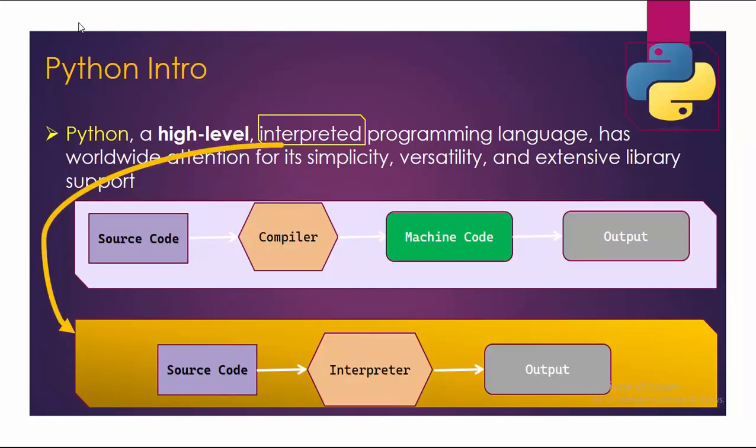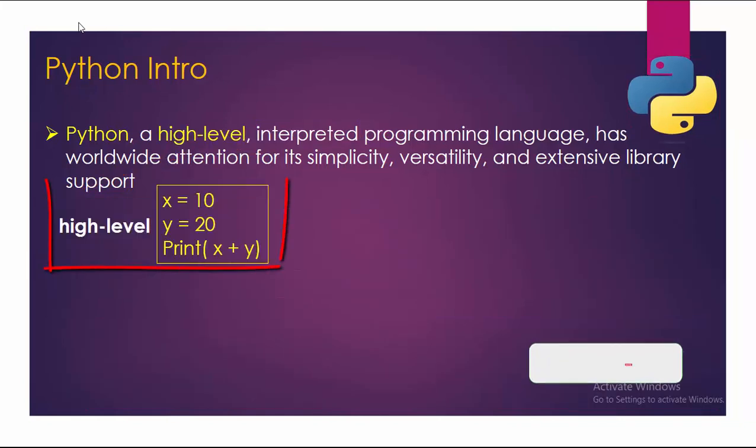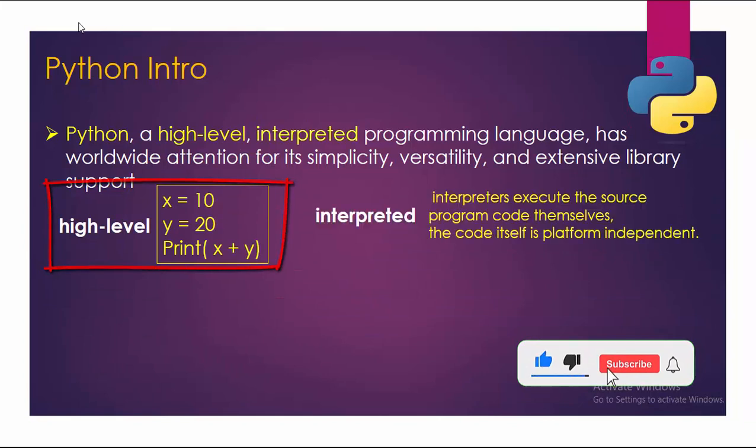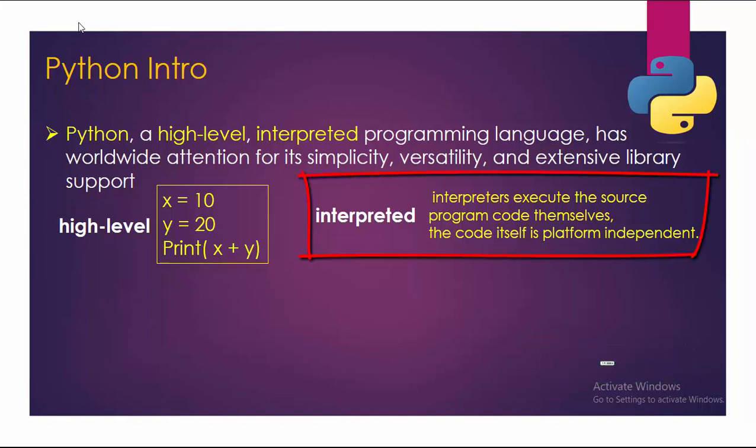As you can see here as well: source code, compiler, then to machine code and output. And in case of Python: source code, then interpreter, and go to the output. Python being high level means it is human readable and understandable. Interpret says it is interpreted before execution and is platform independent.